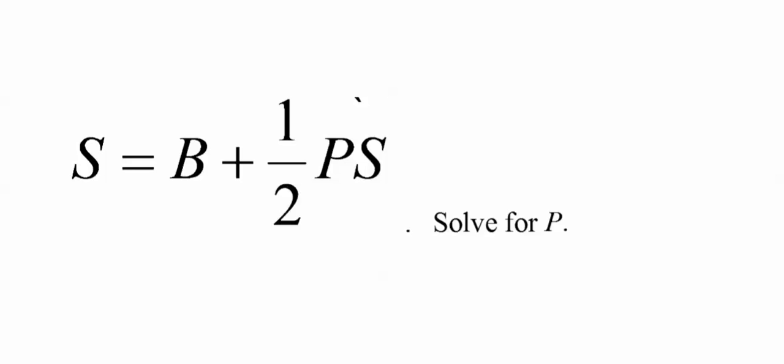How about this one? S equals B plus 1/2 PS, solve for the letter P. Well the first thing I'm going to do is try to get P by itself. So I'm going to subtract B. So I have S minus B equals 1/2 PS. Now, what I can do is I can be real slick here, and I can multiply both sides by 2 to get rid of that fraction.